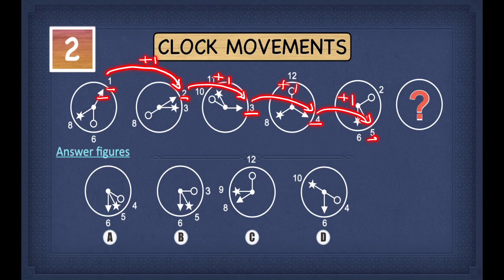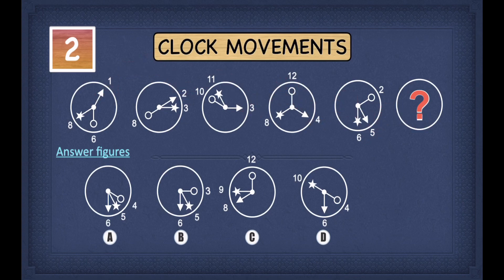So this means to find which number our arrow points towards in the answer, we have to add 1 to 5, which gives us 6. 5 plus 1 is 6.